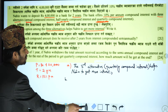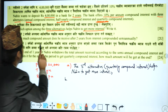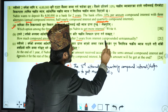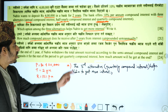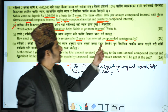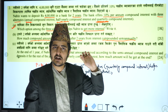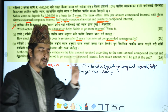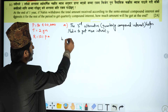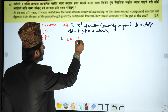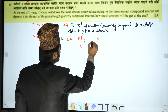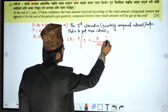How much compound amount does he receive after 2 years from interest compounded semi-annually? We have to calculate the compound amount using the formula: Amount = Principal × (1 + rate/100)^t.